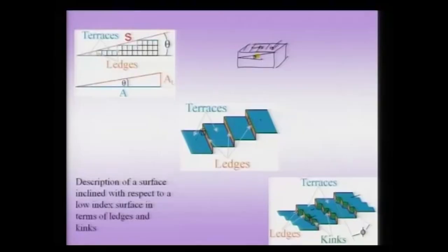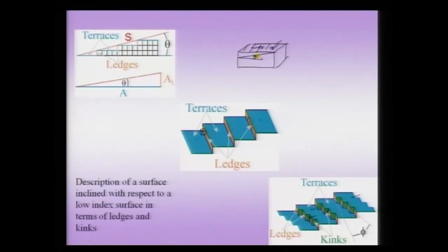The presence of kinks and ledges — which are defects on the surface — actually help in crystal growth. In this case we have considered them as arising out of the necessity of accommodating inclination on the surface: the inclination is accommodated not as a smooth cut, but as a break-up into ledges and kinks, because the crystal will only put out those surfaces which have low energy.